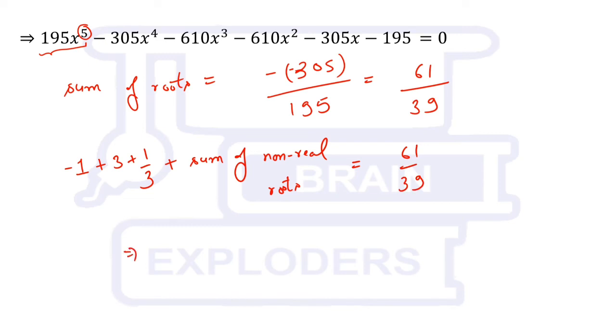It implies that sum of non-real roots is equal to 61/39 plus 1 minus 3 minus 1/3.